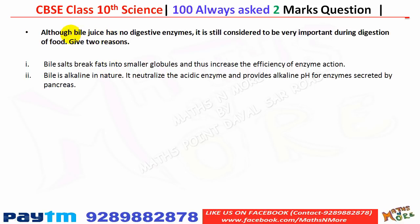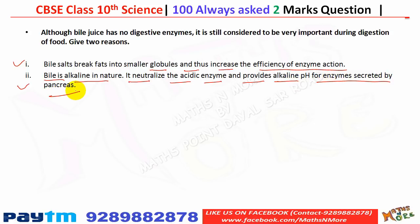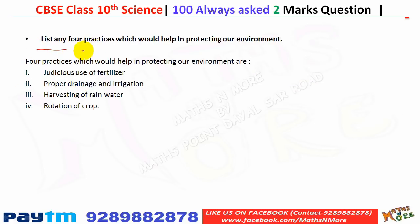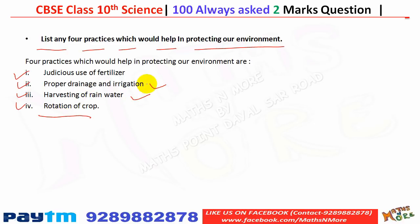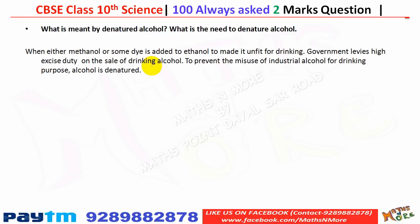Although bile juice has no digestive enzymes, it is still important during digestion for two reasons: bile salts break fat into smaller globules, increasing the efficiency of enzyme action; and bile is alkaline in nature, so it neutralizes the acidic chyme and provides an alkaline pH for enzymes secreted by the pancreas. Four practices to protect the environment: rotation of crops, harvesting of rain water, proper drainage and irrigation, and judicious use of fertilizers.